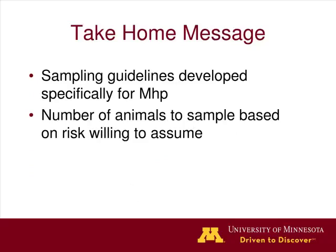The two big take-home messages from our study: first, these sampling guidelines have been developed specifically for Mycoplasma hyopneumoniae, taking into account a non-perfect diagnostic sampling procedure — different from the Cannon and Roe tables developed in 1982 or online calculators. They also account for the number of times to sample a group of animals, which is important because of the slow spread of the bacteria. Second, the number of animals sampled is based on the risk you're willing to assume.